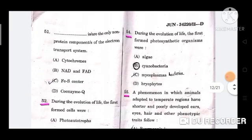Question number 54: During the evolution of life, the first formed photosynthetic organisms were? The correct option is B, cyanobacteria.